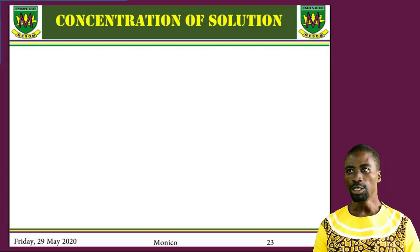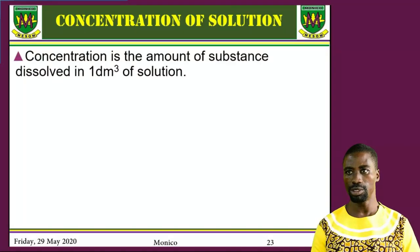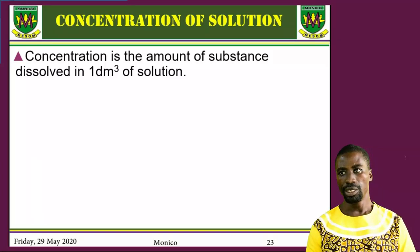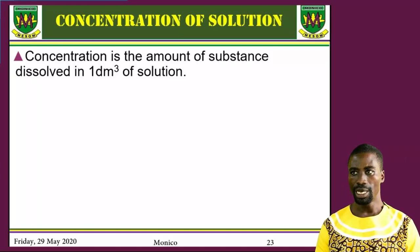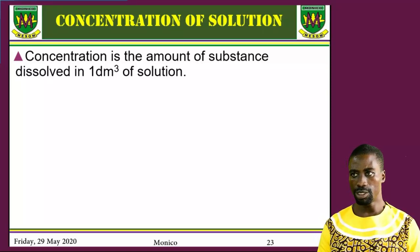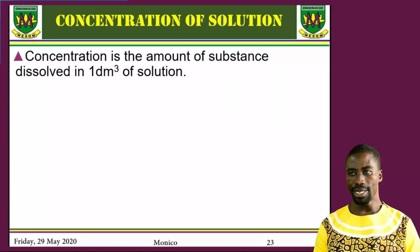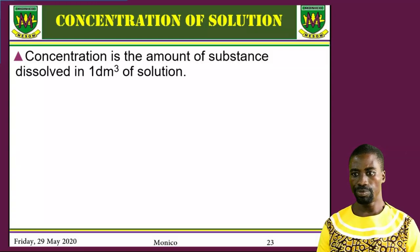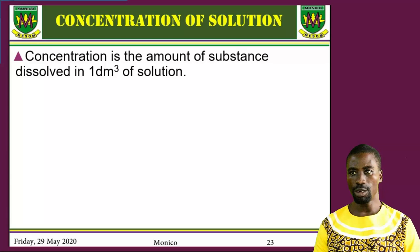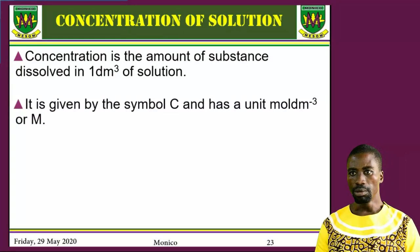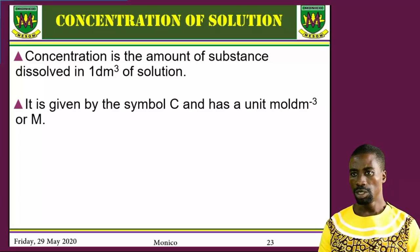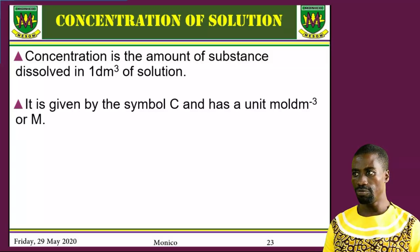So what then is concentration of a solution? Concentration of a solution is the amount of substance dissolved in one decimetre cube of solution. We give the symbol C for concentration, and it has a unit of mole per decimetre cube. Though we have types of concentration, this is the one that is widely used.